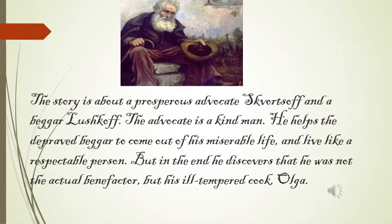To give a short synopsis of this particular story, The Beggar: the story is about a prosperous advocate, Sergei, and a beggar, Lushkov. The advocate is a kind man who helps the depraved beggar to come out of his miserable life and live like a respectable person. He gives him the task of chopping wood and then calls him for different errands. But in the end, he discovers that he was not the actual benefactor, but his ill-tempered cook, Olga — which was the climax to which the story rose.